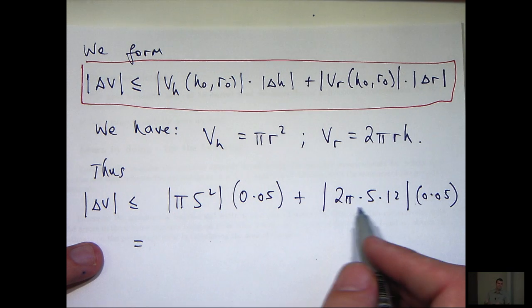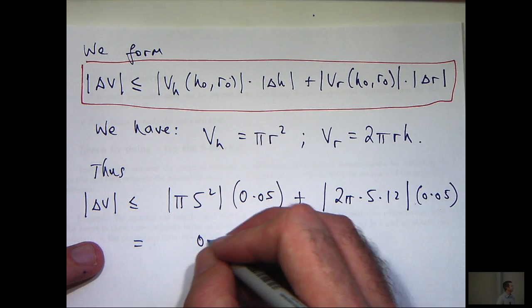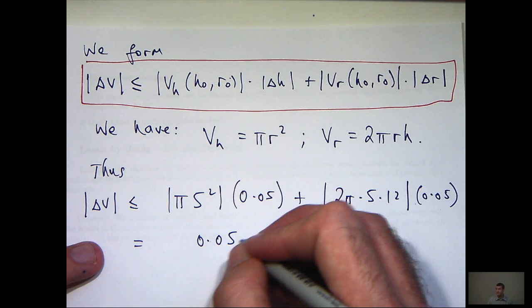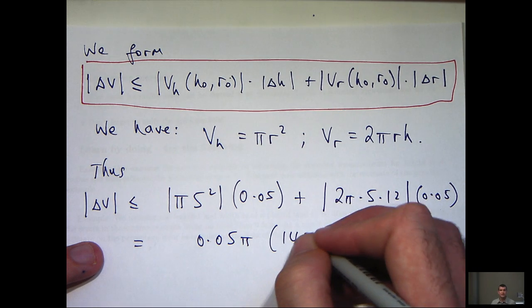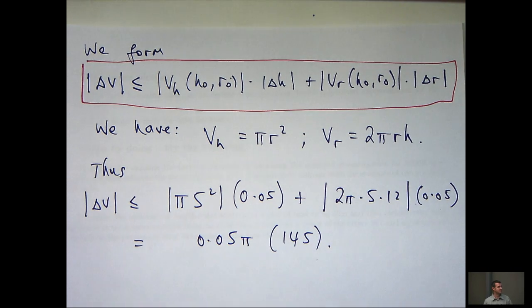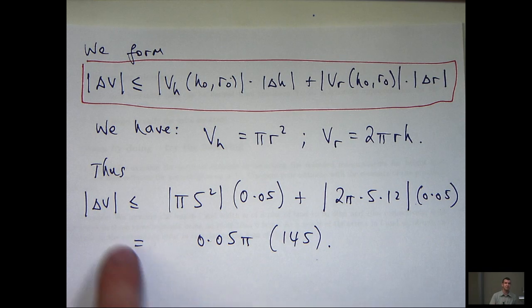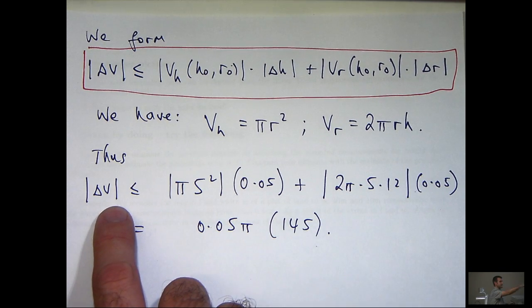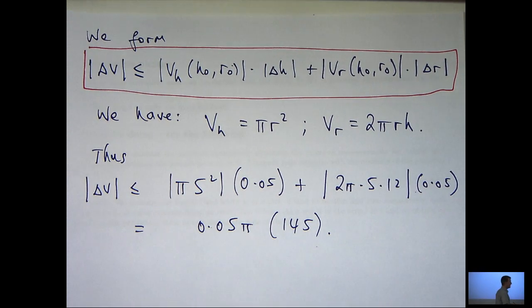If we calculate these, we'll get something like the following. Now, I'm not going to clean that up just yet. So here's an estimate for the error in the computed volume. So this is basically an estimate on the difference between the true volume of the can and our computed volume of the can.